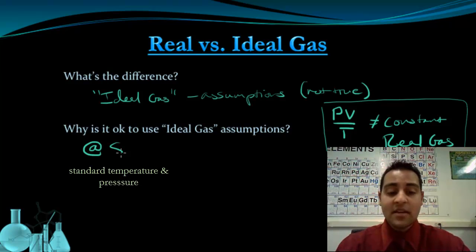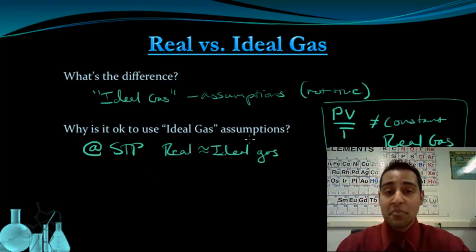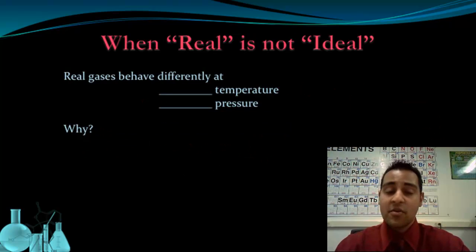So why is it okay to use the ideal gas assumptions in the first place if we know that real gases don't really behave like that? Well, as it turns out, at STP, a real gas does behave very similar to an ideal gas. So a real gas is kind of equal to an ideal gas. It's a pretty good approximation with these assumptions. And that's why we use the ideal gas assumptions in kinetic molecular theory and the ideal gas law, as well as all the other gas laws.